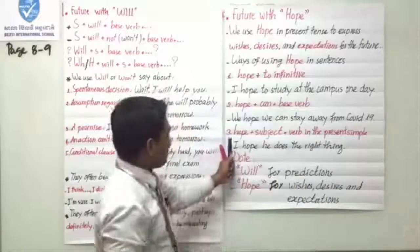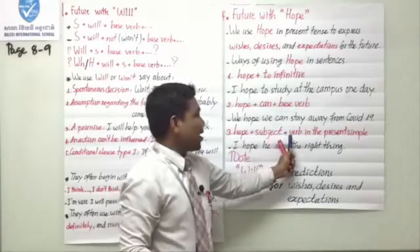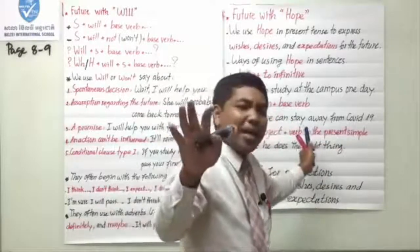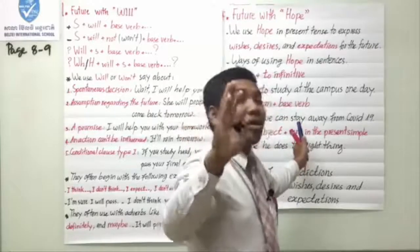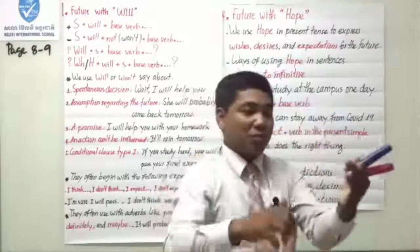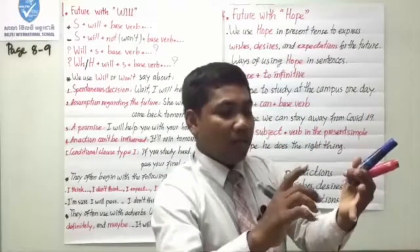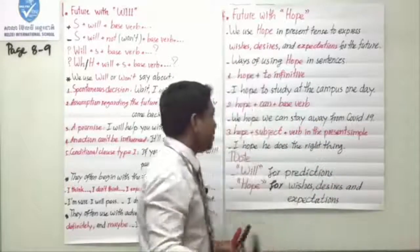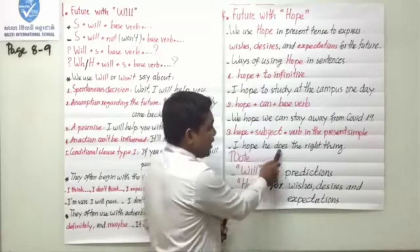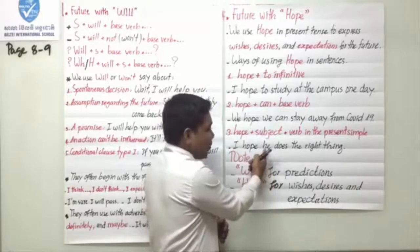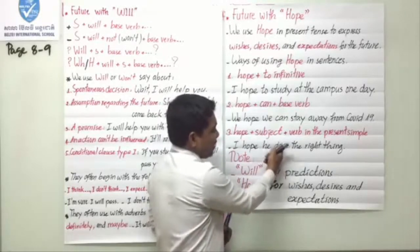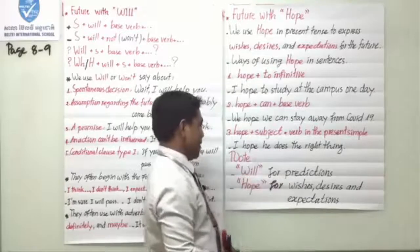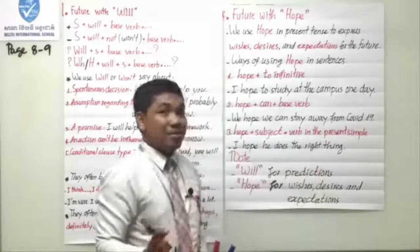Number three: hope plus subject plus verb in present simple — a verb that agrees with the subject. The subject can be singular noun, plural noun, countable, uncountable, or pronoun. For example: 'I hope he does the right thing.' We use 'does' because the pronoun is 'he' — we add -es since the root verb 'do' ends in O.